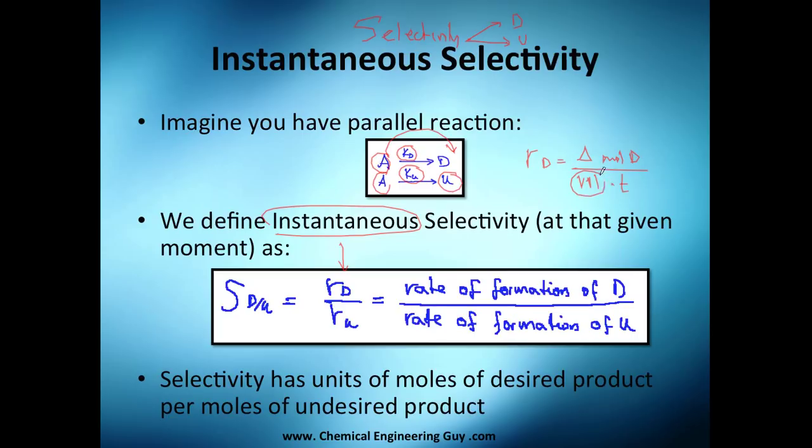Since the volume is fixed or per unit volume, we're talking about how many moles are we producing per unit time. We're going to make a ratio between these two: the rate of formation of our desired product D, how many moles per second we're producing, versus the moles of production of U.